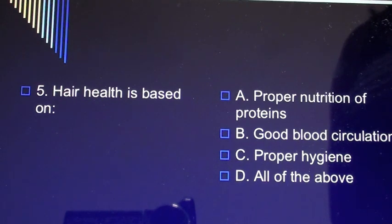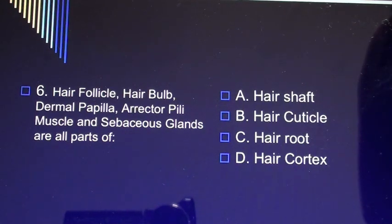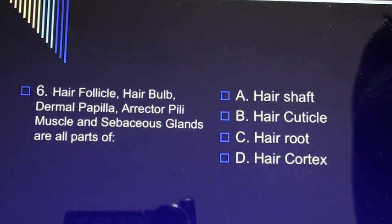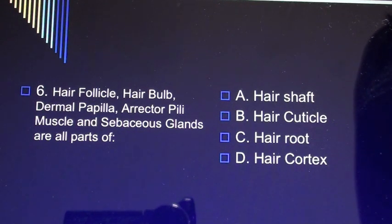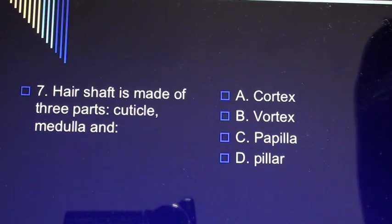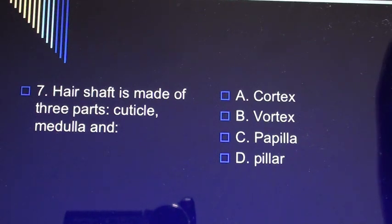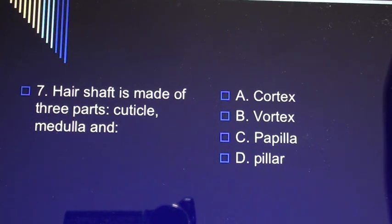Question 6: Hair follicle, hair bulb, dermal papilla, erector pili muscle, and sebaceous glands are all parts of A) hair shaft, B) hair cuticle, C) hair root, D) hair cortex. Question 7: Hair shaft is made of three parts: cuticle, medulla, and A) cortex, B) vortex, C) papilla, D) pillar.